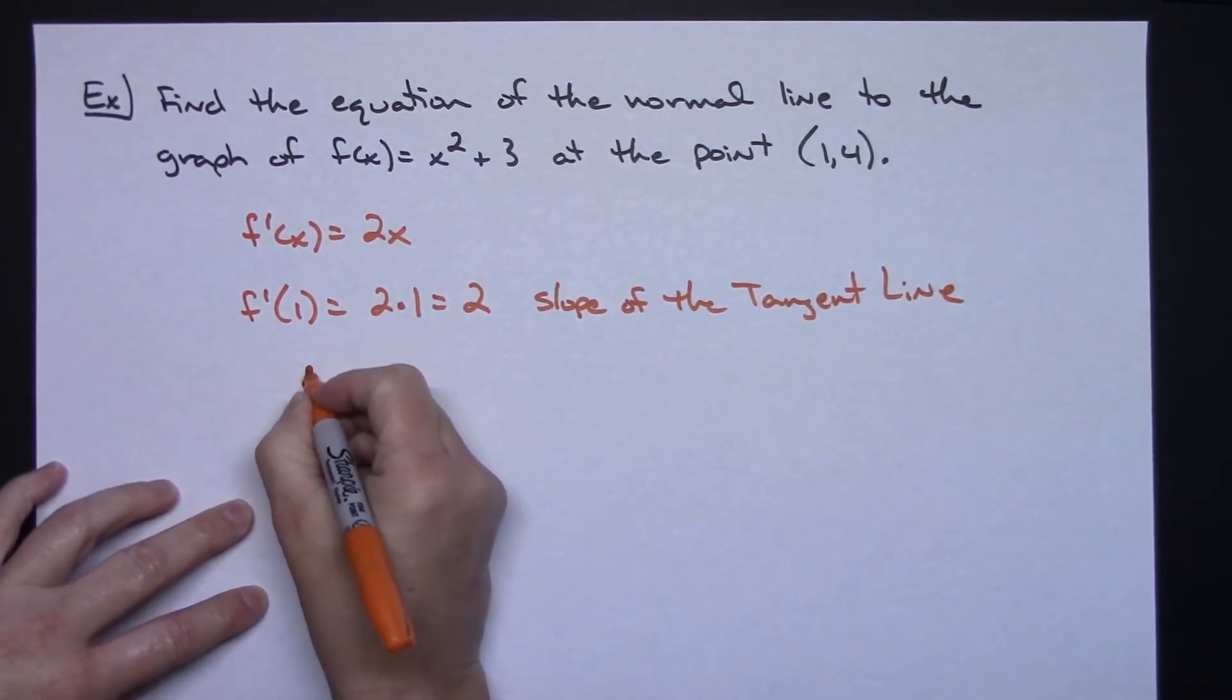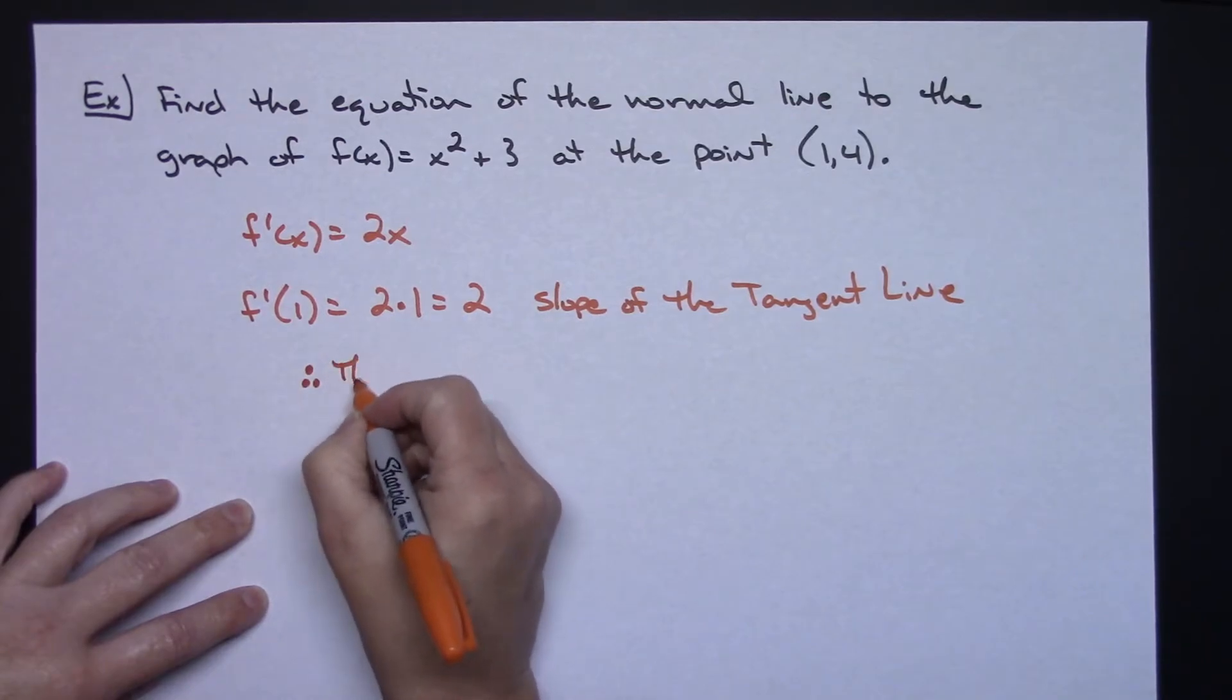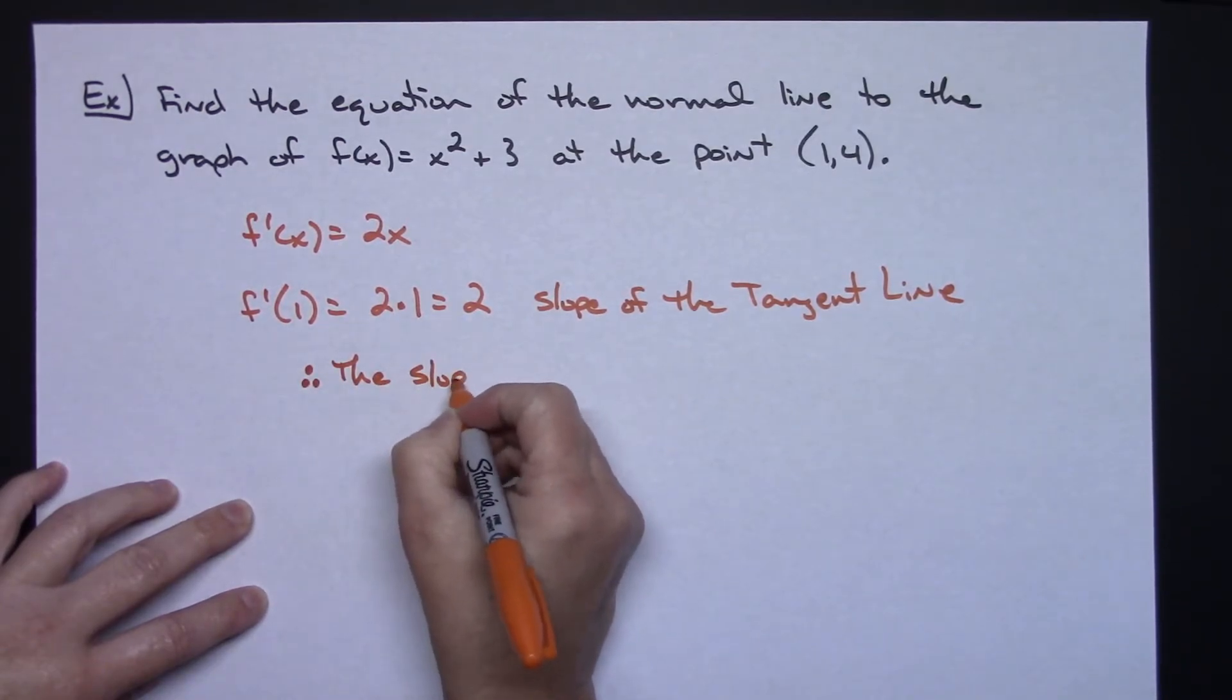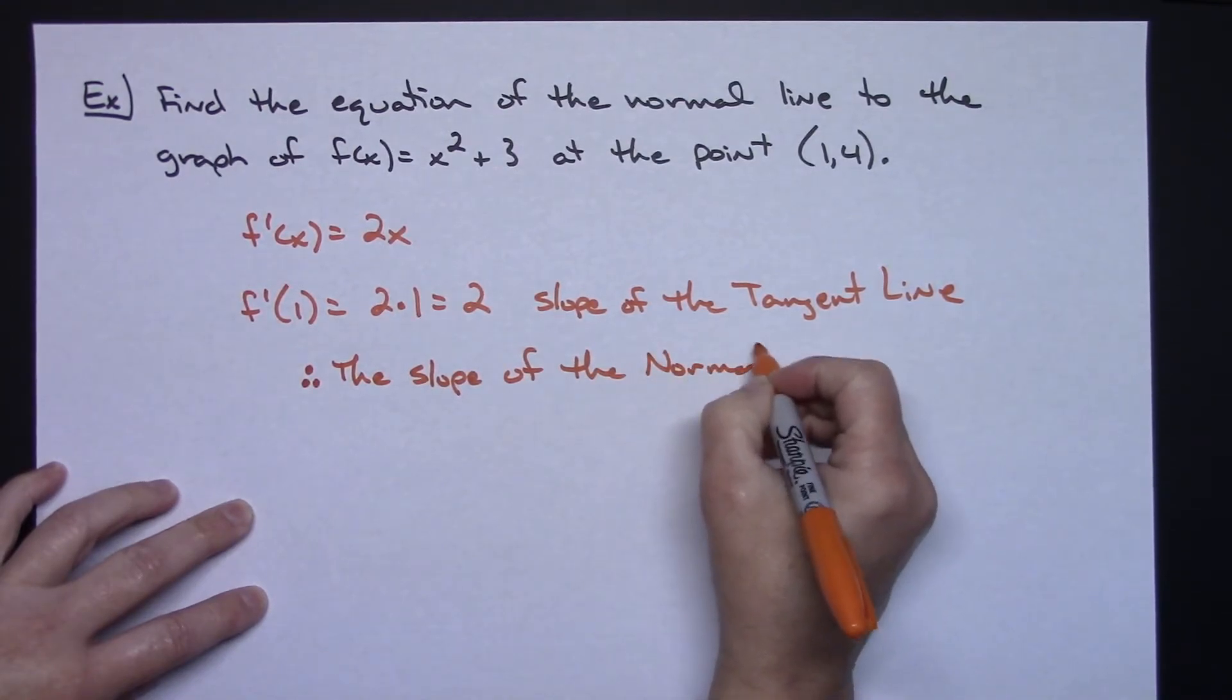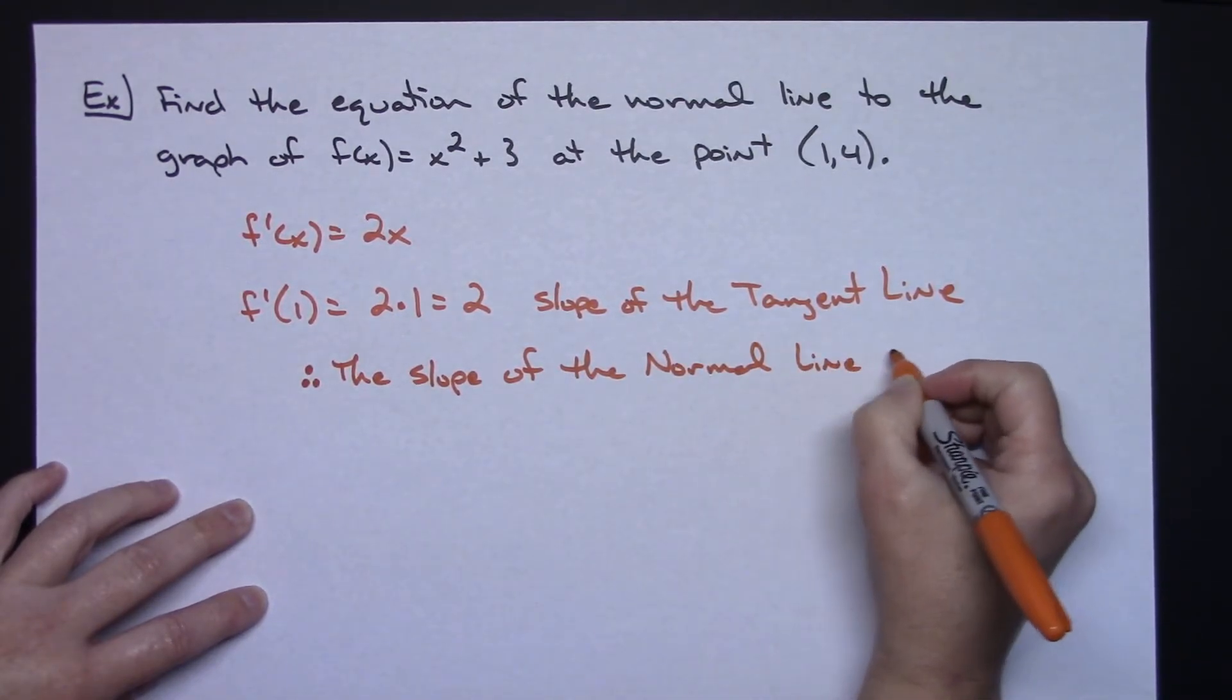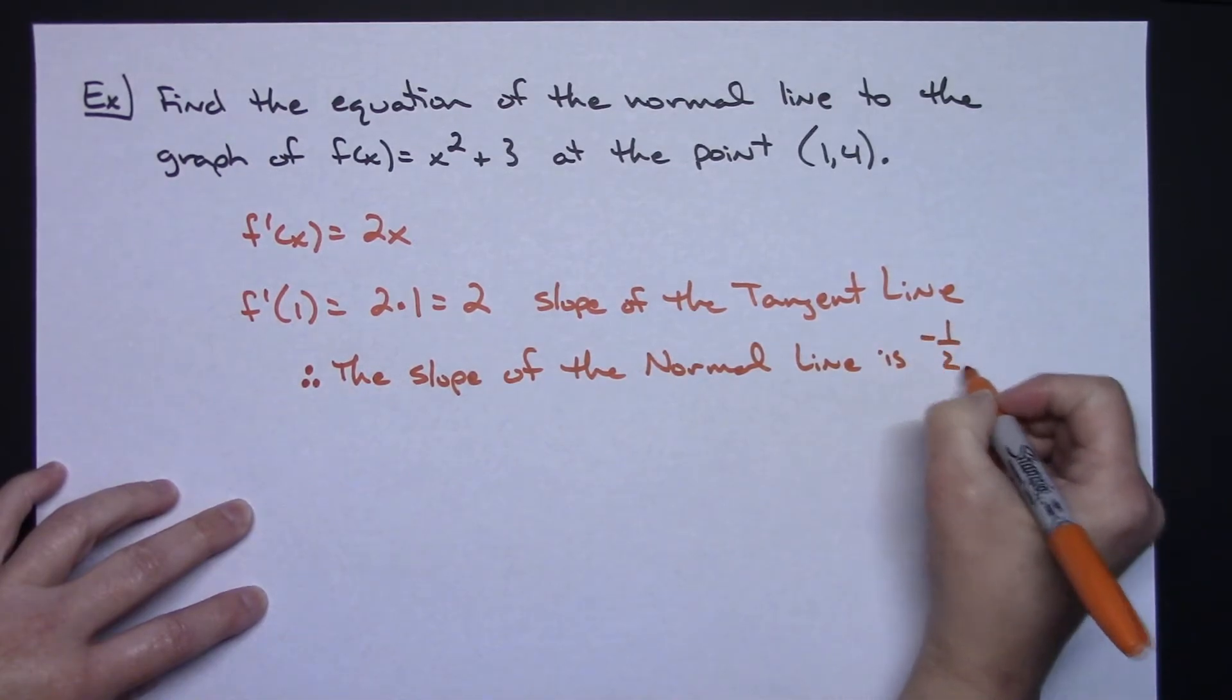So I can draw the conclusion that therefore the slope of the normal line is -1/2.